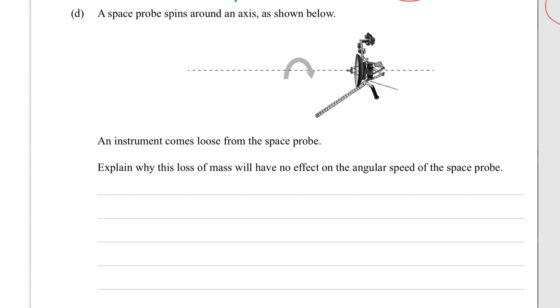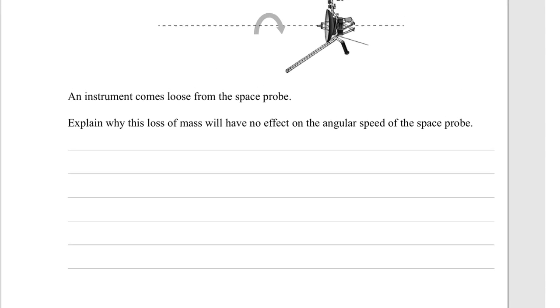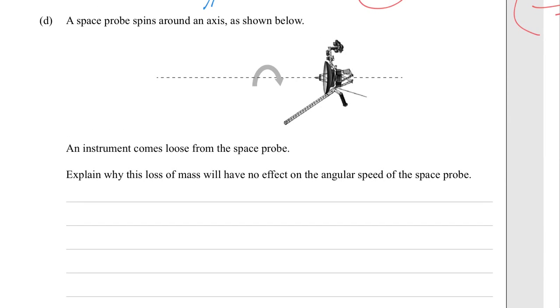It's coming down in D, I think this is the last question for this part, yes, a space probe spins around on an axis as shown below and it's shown in this. An instrument comes loose from the space probe so maybe a part breaks off. Explain why this loss of mass will have no effect on the angular speed of the space probe.